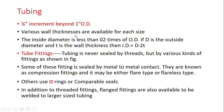Various wall thicknesses are available for each tubing size, as per schedule size. The inside diameter (ID) is calculated as: ID = OD minus 2 times the wall thickness (t). So if D is the outside diameter and t is the wall thickness, then ID = D − 2t.